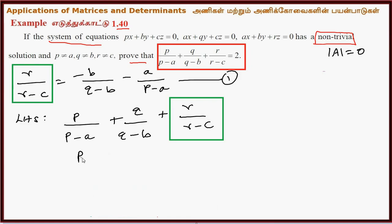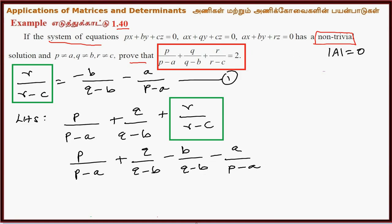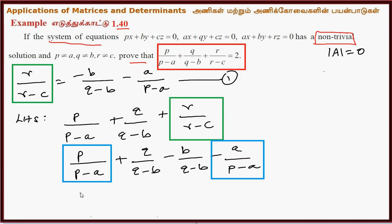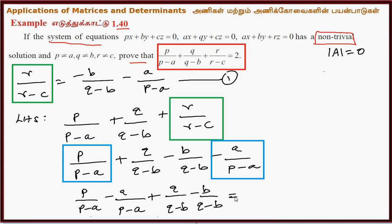The first term is P divided by P minus A, plus Q divided by Q minus B, which equals minus B divided by Q minus B, minus A divided by P minus A. The first and last terms combine: P divided by P minus A minus A divided by P minus A. The second term is Q divided by Q minus B minus B divided by Q minus B. The numerator equals P minus A divided by P minus A.